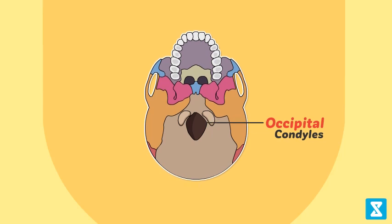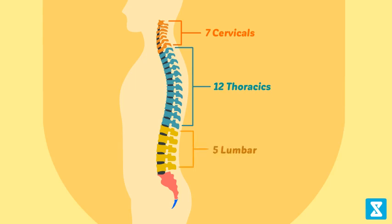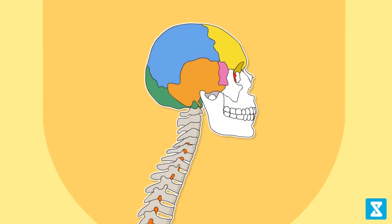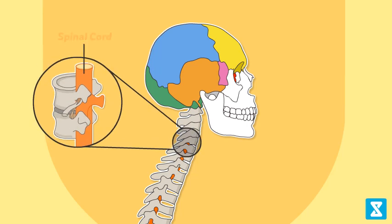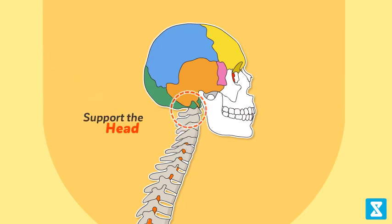Starting from the skull, the vertebral column is differentiated into seven cervicals, 12 thoracics, 5 lumbar, 1 sacral, and 1 fused coccygeal region. Functions of the vertebral column are to protect the spinal cord, support the head, and serve as the point of attachment for the ribs and musculature of the back.